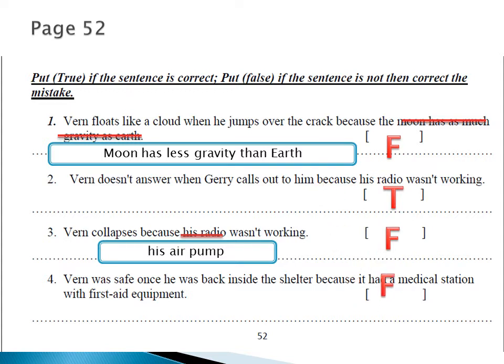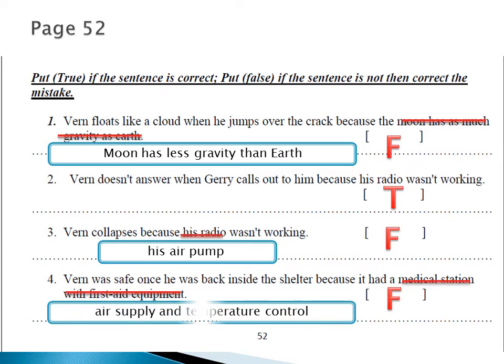Number four is false. 'Verne was safe once he was back inside the shelter because it had a medical station with first aid equipment.' Did he need first aid? No — in our story he didn't receive first aid. The room at the beginning of the shelter was called the airlock, where they found the oxygen supply and temperature control. So we cross out 'medical station' and 'first aid equipment' and write 'air supply and temperature control inside the shelter.'